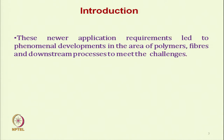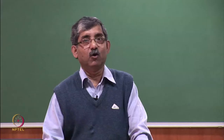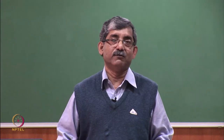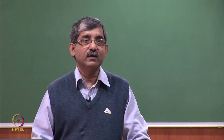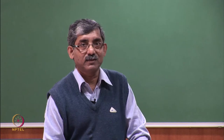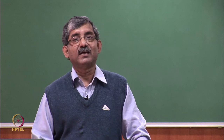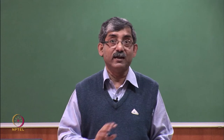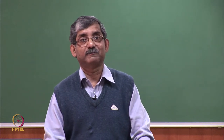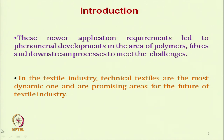This newer application — when we talk about specific applications — requires development of newer polymers, types of fibres, and downstream processes to meet the specific challenge for a particular area. For example, woven fabric can be used for filter application or for thermal protective application, but their construction, selection of fibre, and finishing techniques will be entirely different depending on the application. In the textile industry, technical textiles are the most dynamic and promising area for the future.